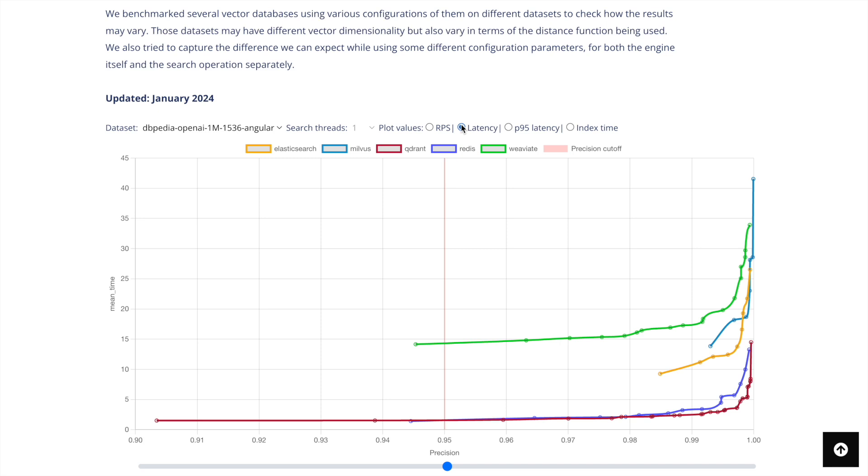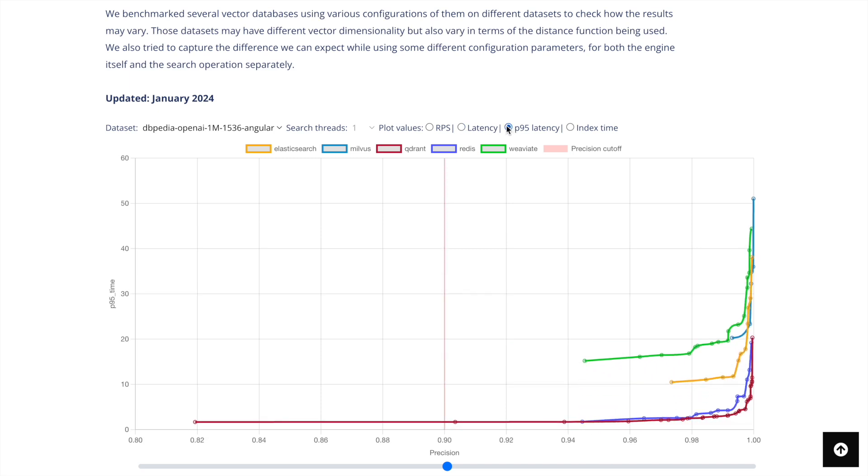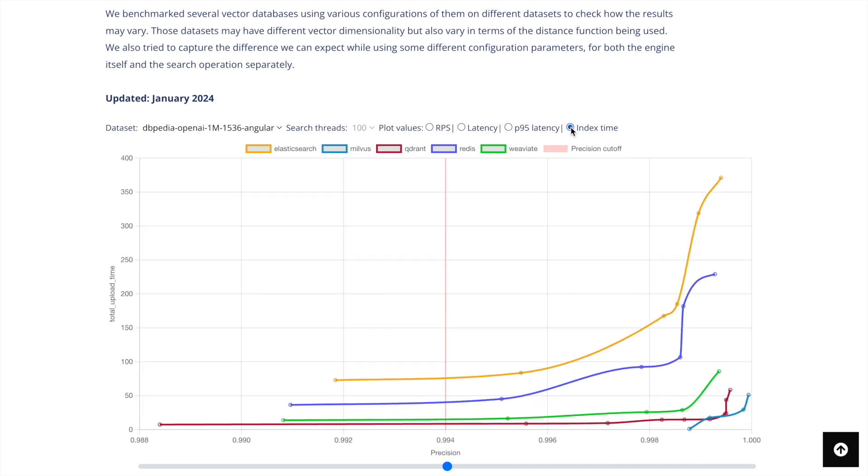Similarly, you have a P95 latency numbers, again here as well Quadrant has the lowest P95 latency numbers. And if I look at the index time, it's again very low, that simply signifies that you can kind of quickly create indexes for your data, which is where again Quadrant outshines the competition that exists.